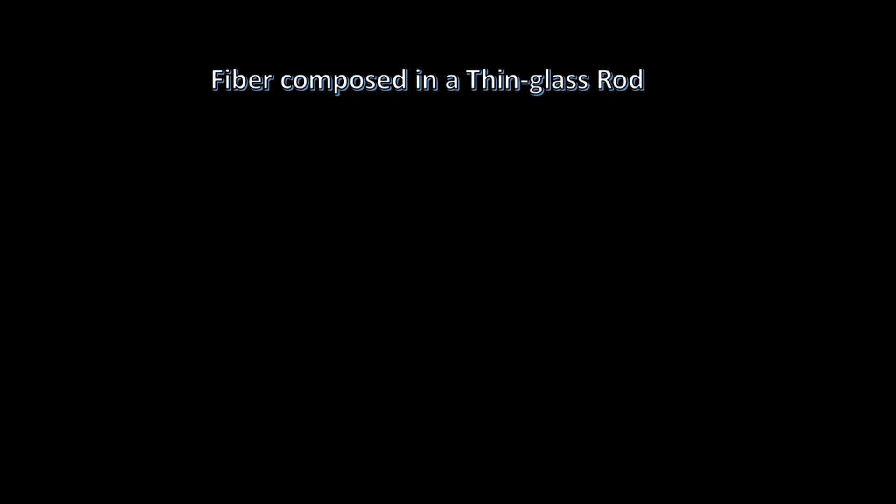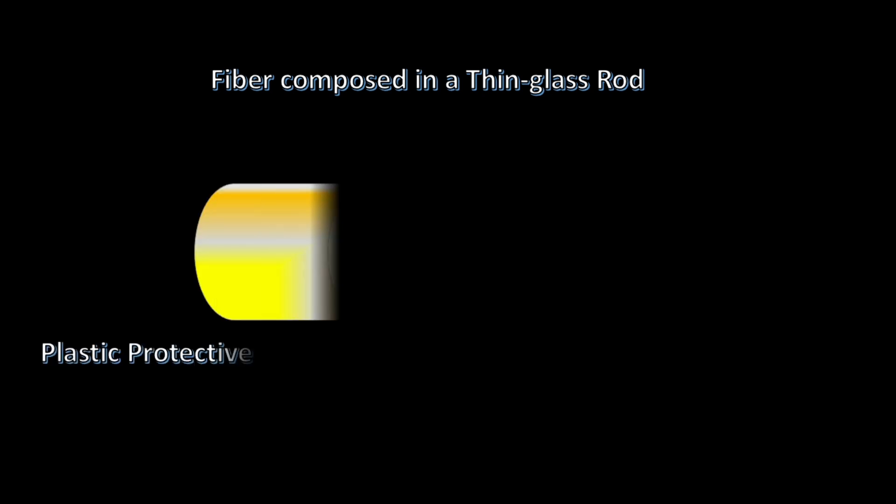As we all know, an optical fiber is composed of a thin glass rod and contains three parts. First is the coating, which is a plastic protective layer that protects the fiber.